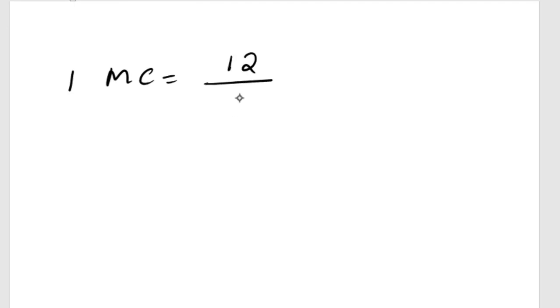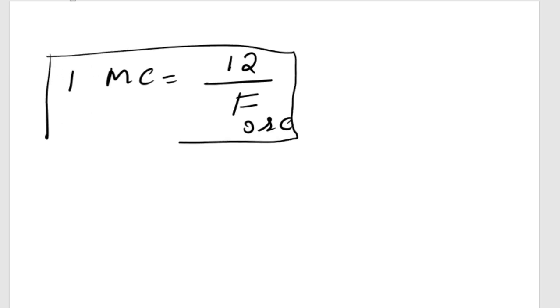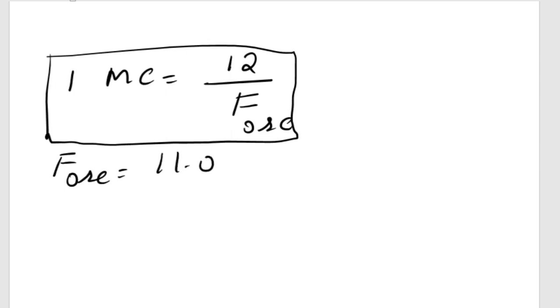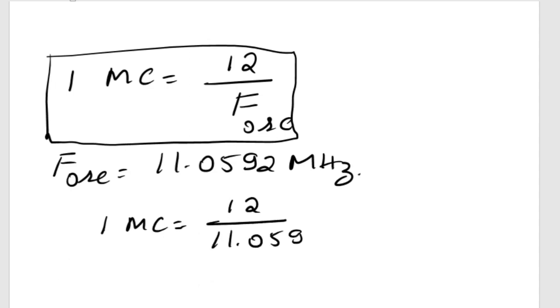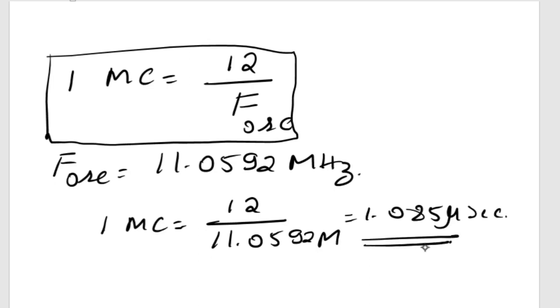One machine cycle equals 12 divided by f-oscillation. To calculate the machine cycle requirement, once you know the time for one machine cycle — for example, if f-oscillation is 11.0592 MHz — then the time for one machine cycle equals 12 divided by 11.0592 MHz, which equals 1.085 microseconds. So one machine cycle takes 1.085 microseconds.